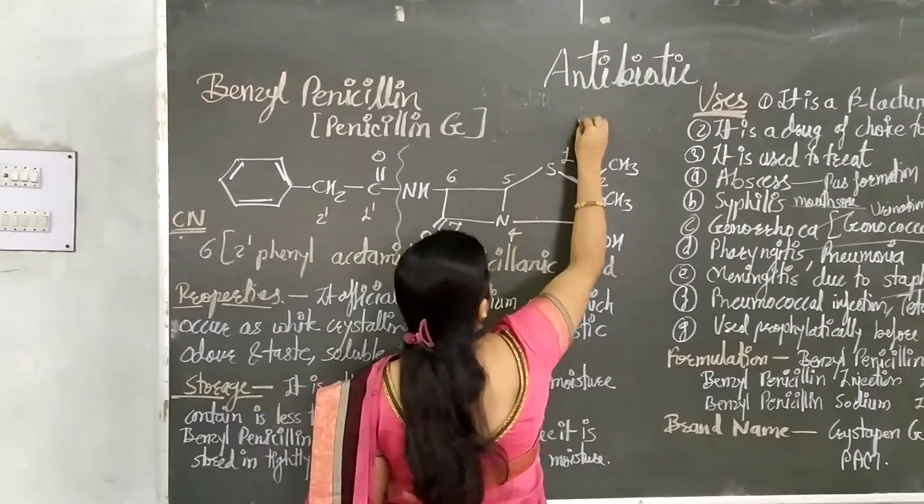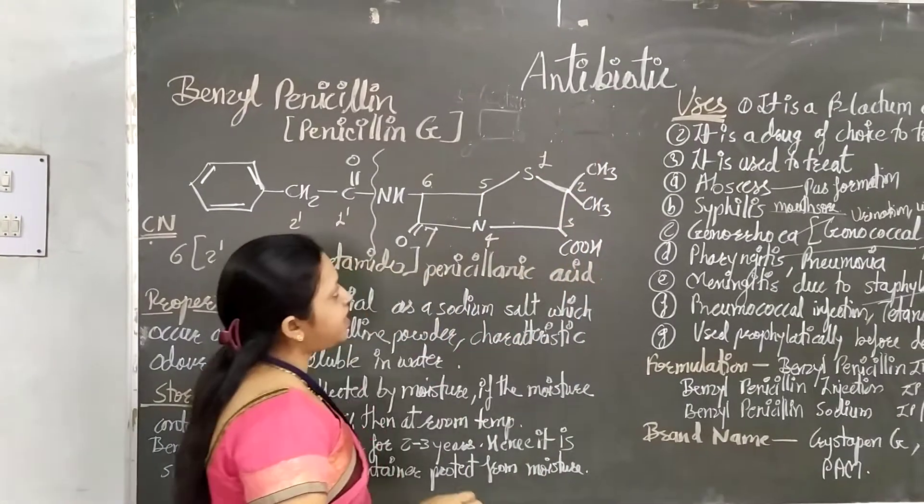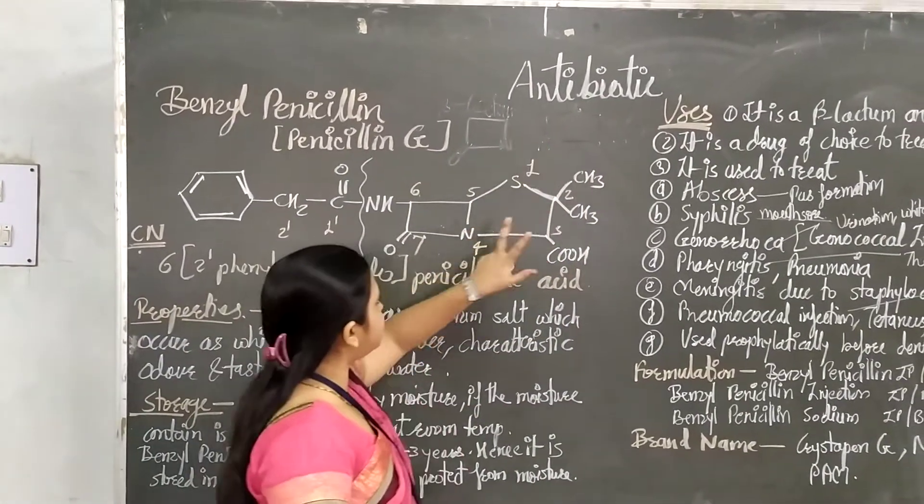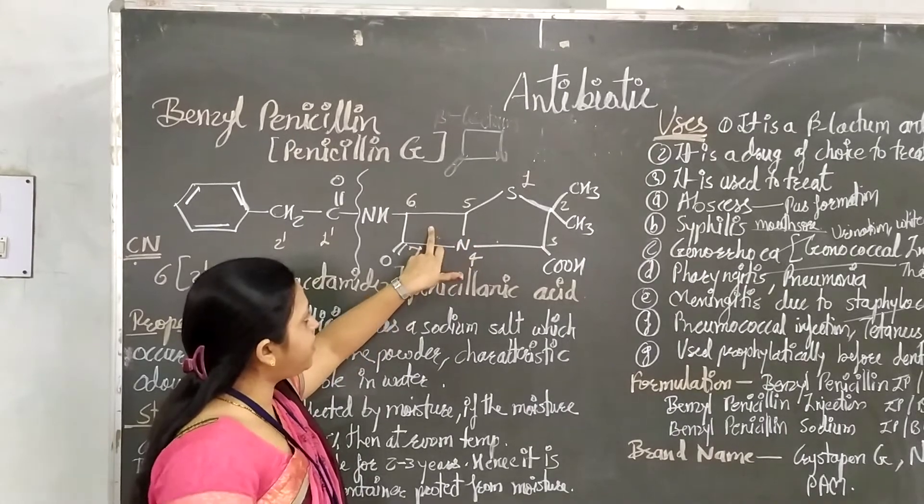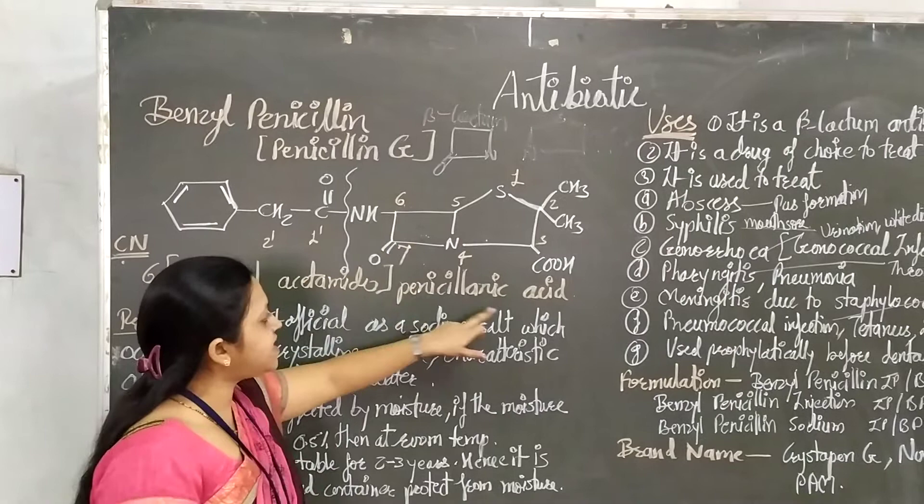The second is the thiazolidine ring, which contains nitrogen and sulfur. These are fused - one 4-membered ring and one 5-membered ring. This is the entire penicillanic acid structure.